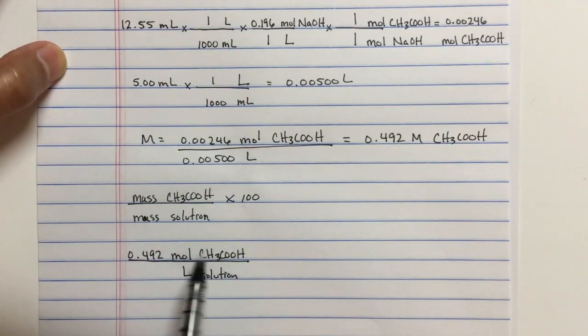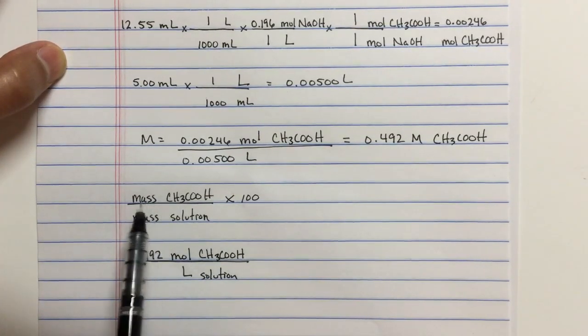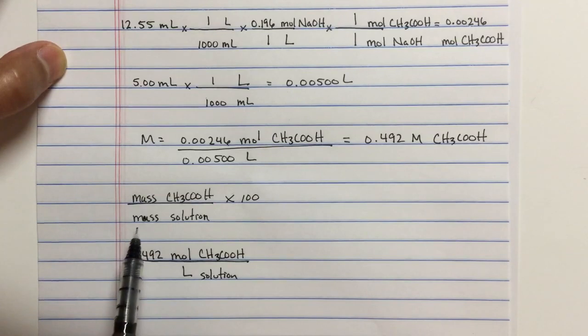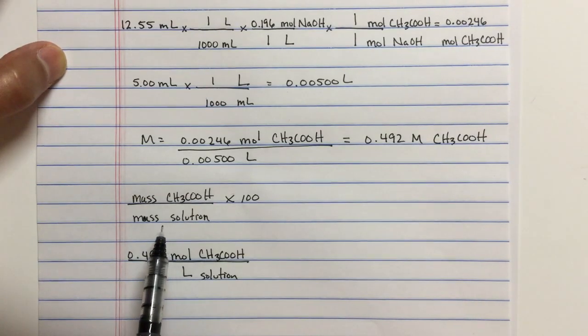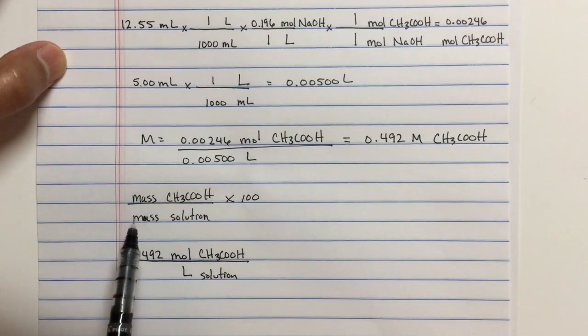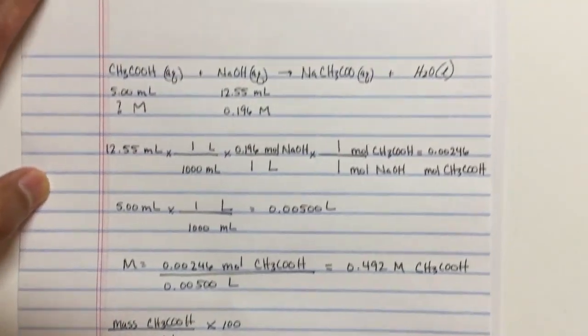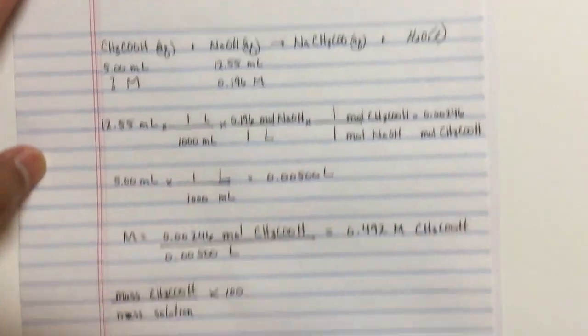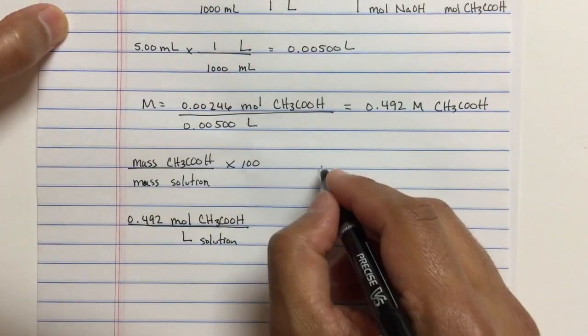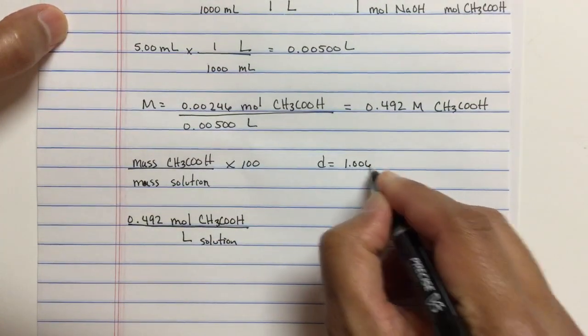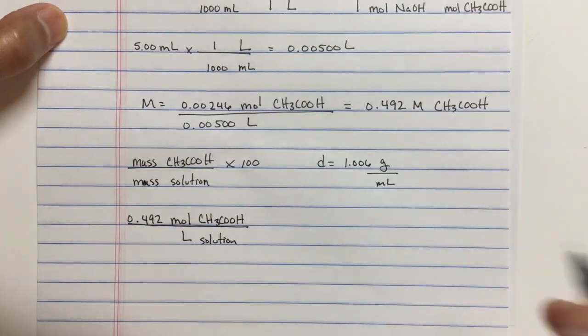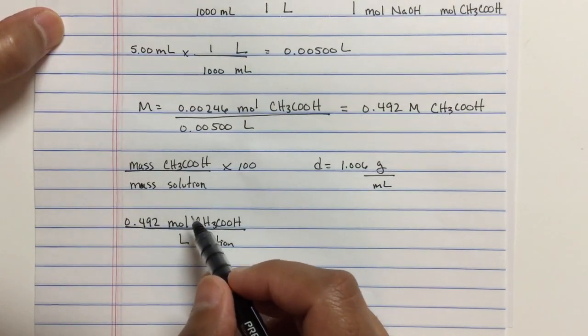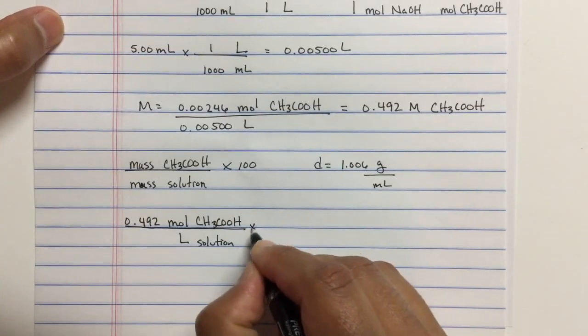Look at the units. Now, we can convert volume to mass if we know the density. And of course, if we look at our problem, the density was given to us. The density, I'll go ahead and write it down here, is 1.006 grams per milliliter.